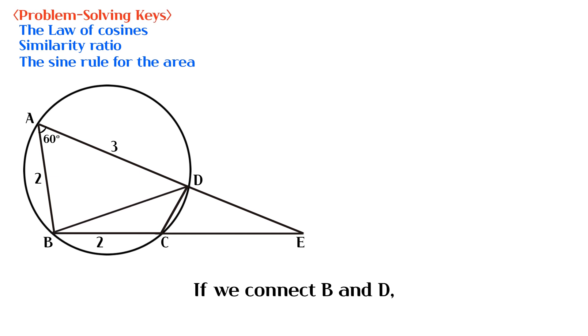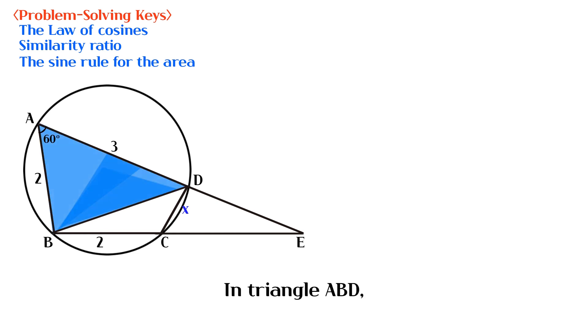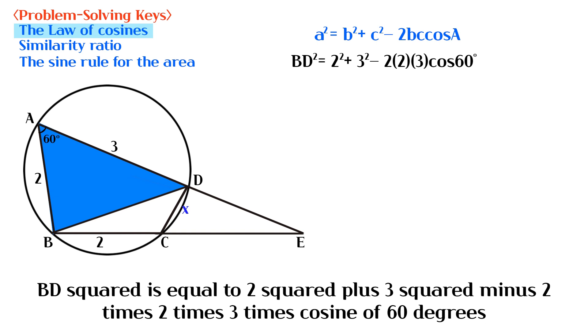If we connect B and D, we can find the length of CD by using the common side of triangle ABD and triangle BCD. In triangle ABD, two sides and the included angle are given. The length of BD can be found using the law of cosines. BD squared is equal to 2 squared plus 3 squared minus 2 times 2 times 3 times cosine of 60 degrees.